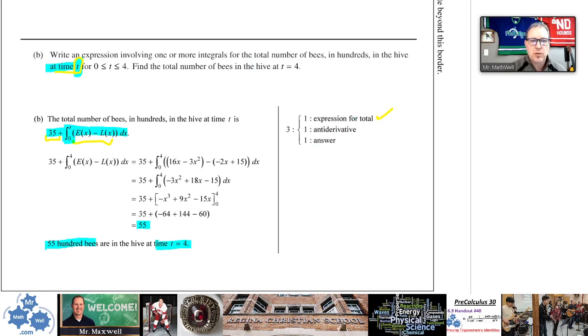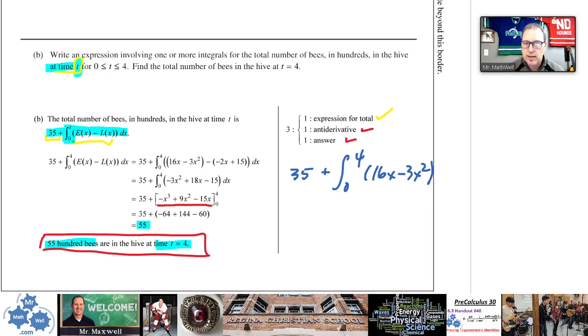That is at time equals 4. So you get one mark for the expression. You get one mark for the antiderivative, finding the antiderivative here, doing this properly. And then you get one mark for your answer down here. That's the breakdown. Any questions? Online class now, any questions? So the question was, can we write two integrals? Yeah, I think you can. It says involving one or more integrals. So you can write this as two integrals. You have 35 plus the integral of 0 to 4 of 16x - 3x² dx minus the integral of 0 to 4. It's over the same full span of time. So 0 to 4, 0 to 4, you don't split those limits up. But then you're going to subtract the integral of the rate of leaving. So something like that. Yeah, that's perfect for that integral. One or more integrals. Good question.